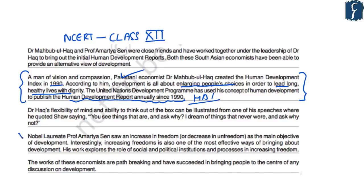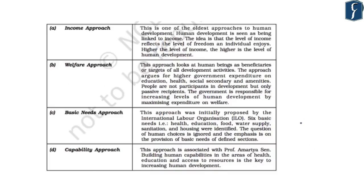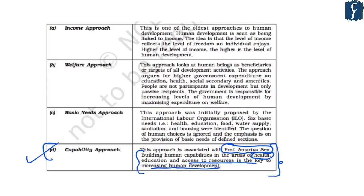Nobel laureate Prof. Amartya Sen saw increasing freedom, or decreasing unfreedom, as the main objective of development, and increasing freedoms as one of the most effective ways of bringing about development. Both Dr. Mehboob al-Haq and Prof. Amartya Sen stressed on increasing choices and freedom, and accordingly defined the approach for development as the capability approach, associated with Prof. Amartya Sen. He highlights that building human capabilities in health, education, and access to resources is key to increasing human development.